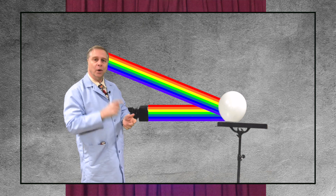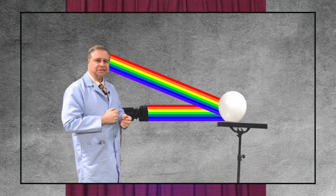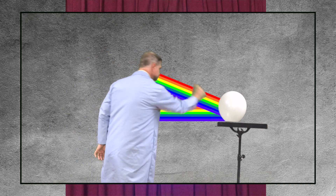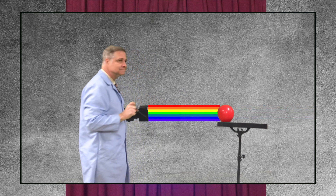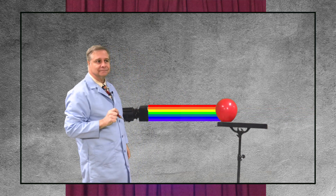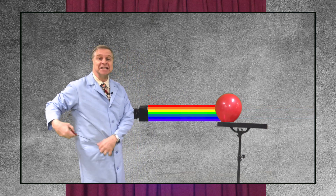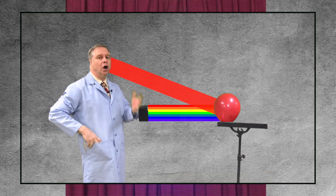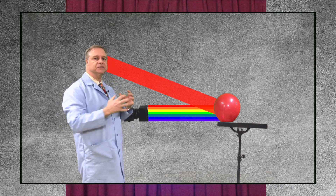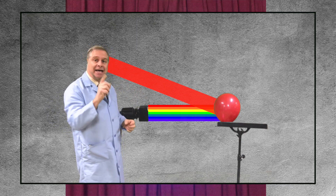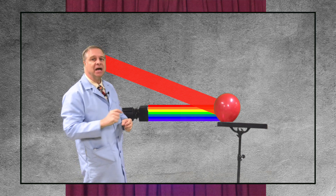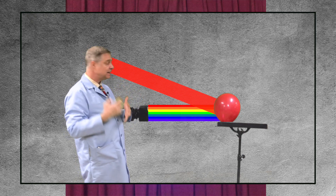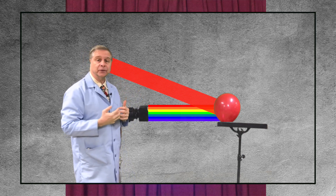But what if I replace the white balloon with a red balloon? The same thing happens. Now all the colors of the white light will be absorbed except for the color red. The red color will be reflected back to my eye, and I see a red balloon.